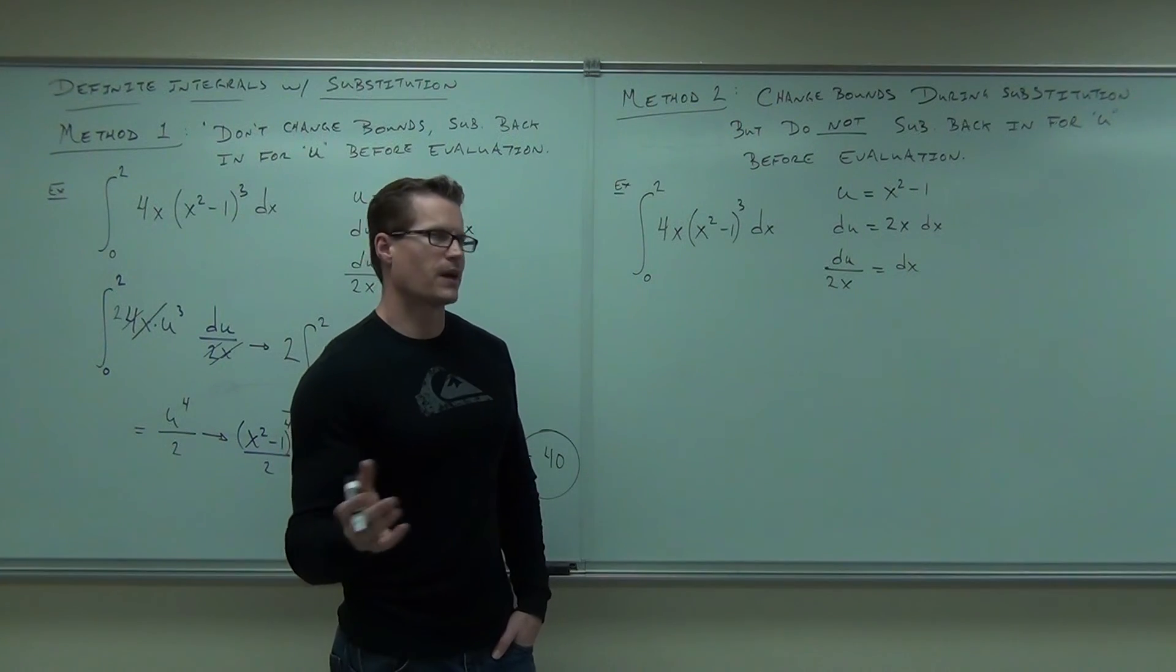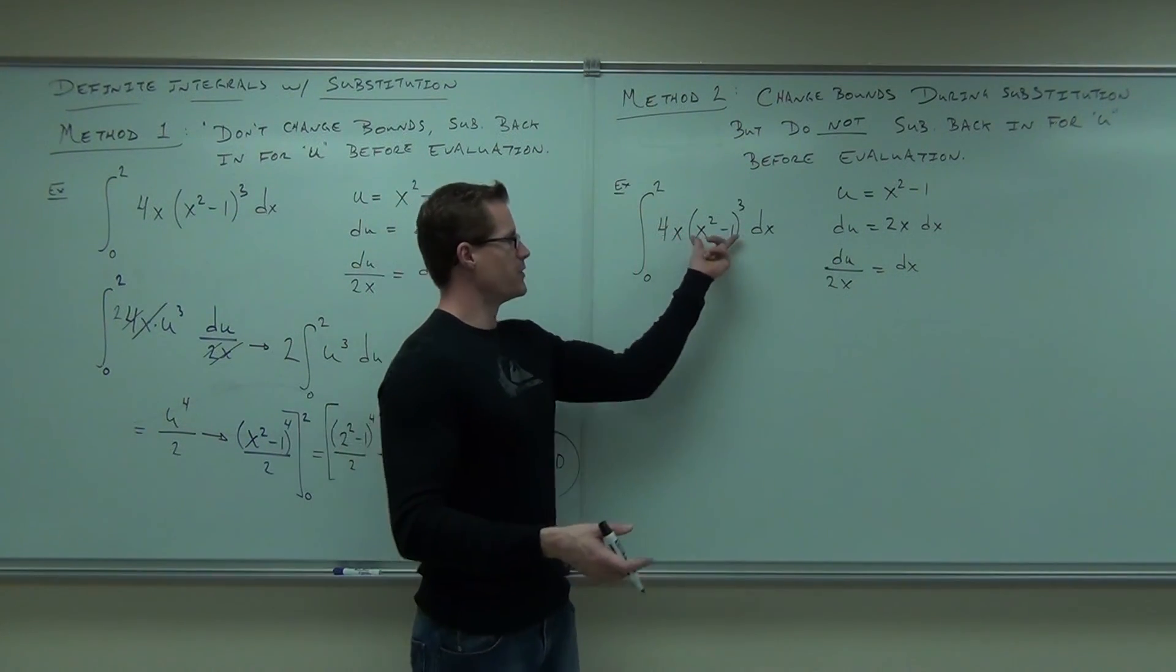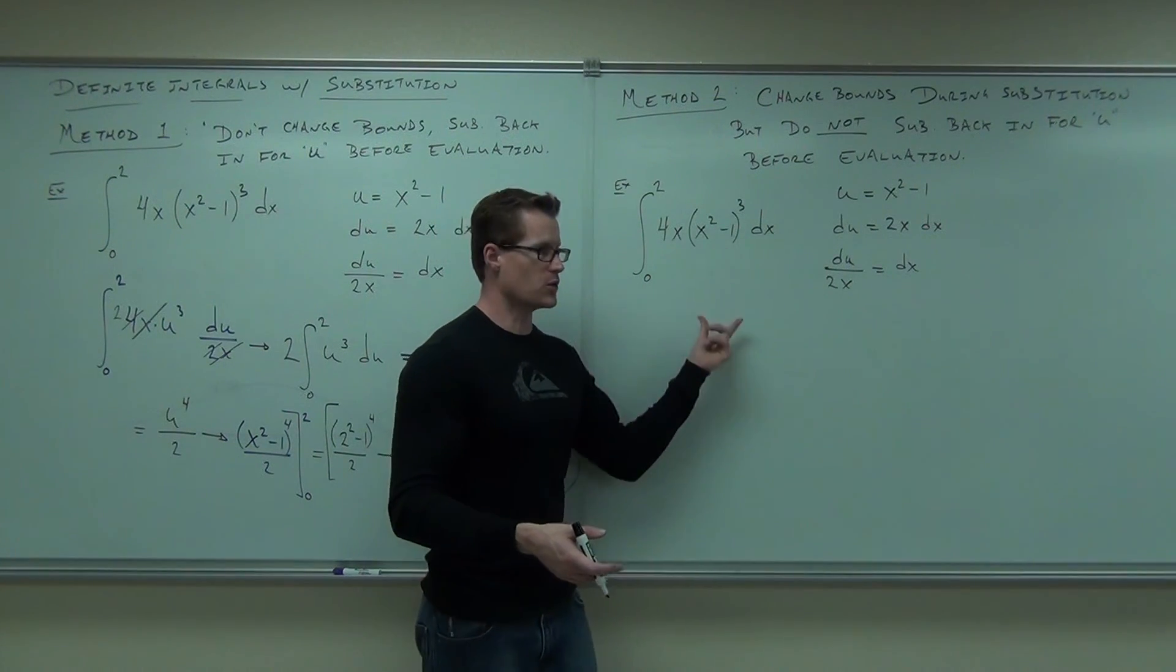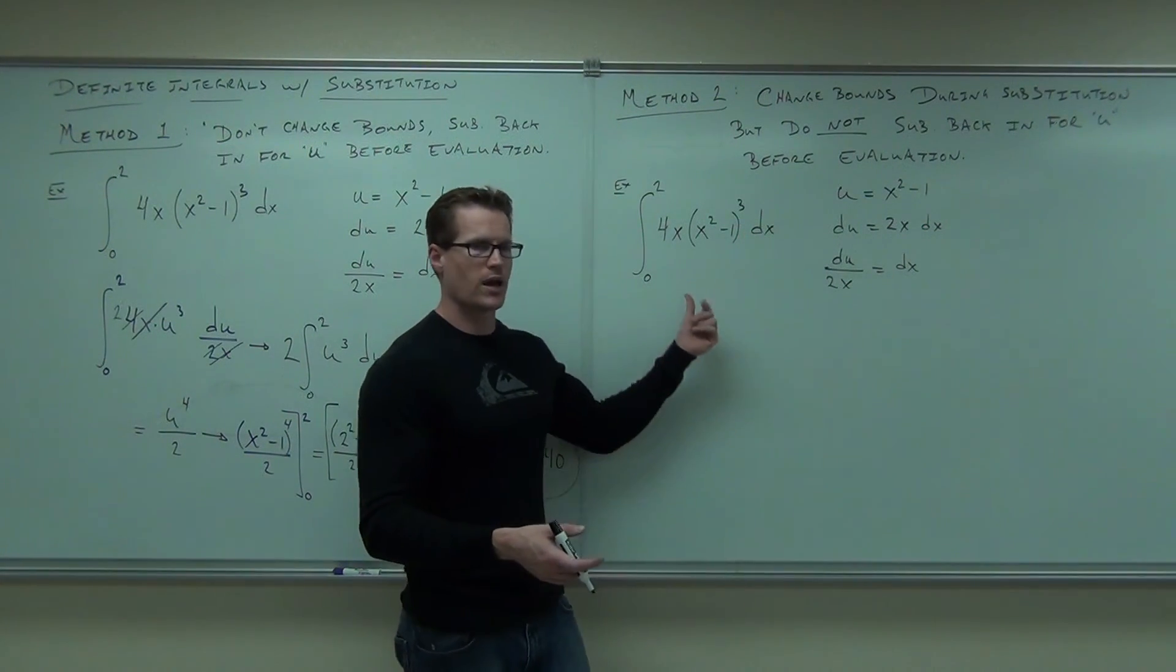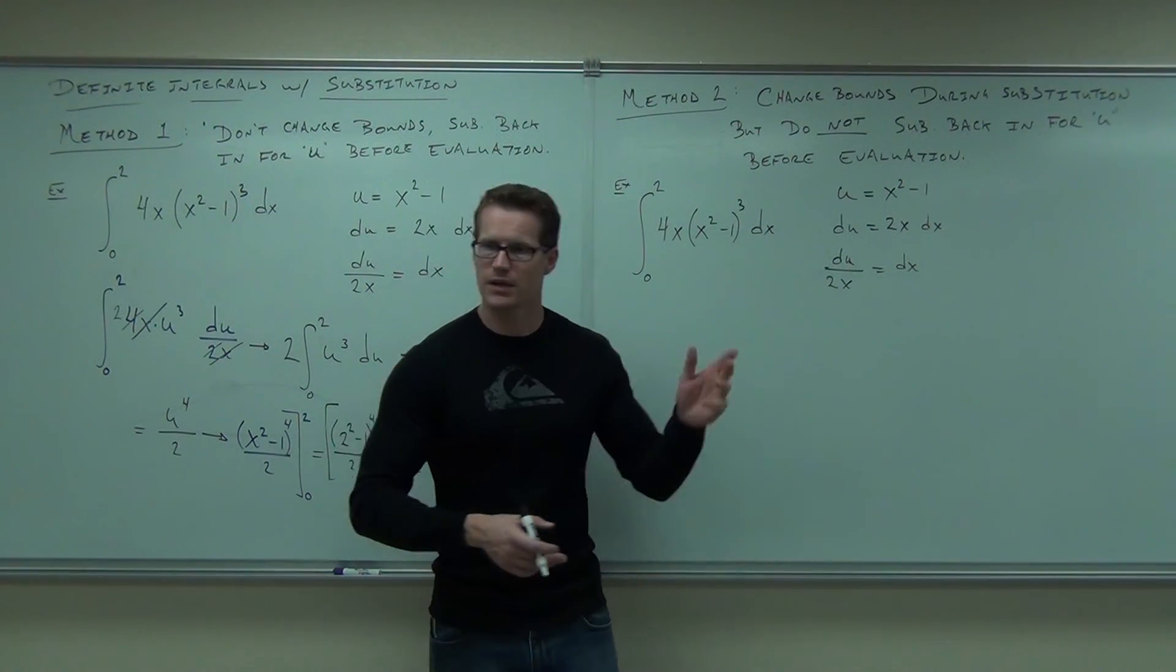Here's the change. The change says, well, since we're substituting everything anyway, I mean, we're substituting this for u, this x part for u, and this x part for u, why not just do the bounds as well? Why don't we substitute those things for u as well? And here's how to do it.